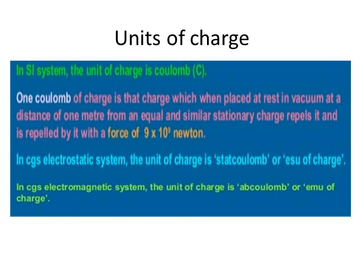And in electromagnetic CGS system, the unit of charge is ab coulomb or electromagnetic unit of charge. And the relation between the three will be: 1 coulomb is equal to 1/10 ab coulomb, equals to 1/10 emu of charge.